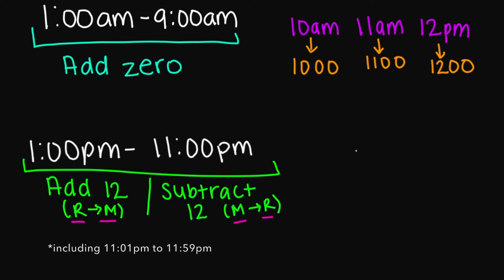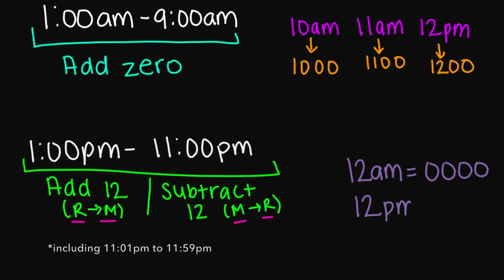When it comes to 12 a.m., this is going to equal 0000 hours, which is midnight. And remember, if you have 12 p.m., this is going to equal 1200 hours.